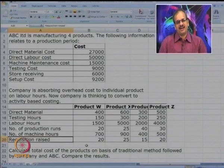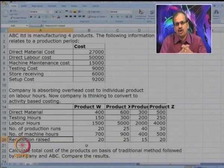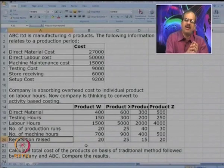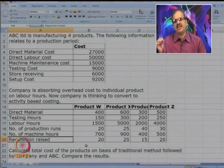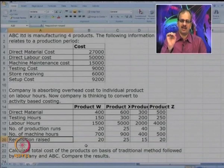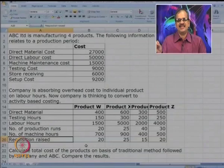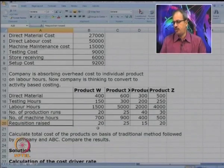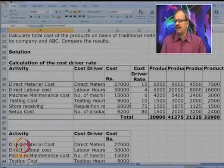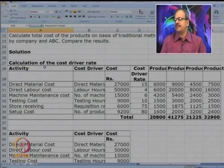How will we proceed under the traditional method? First we take the total overhead cost, then take the total number of labor hours, and divide the total cost by labor hours to get the cost per labor hour. Then, depending on the number of labor hours for each product W, X, Y, and Z, we charge all the cost to the respective product.